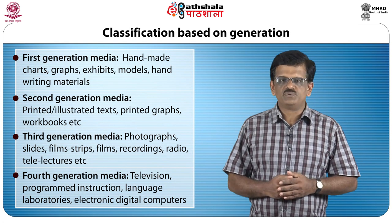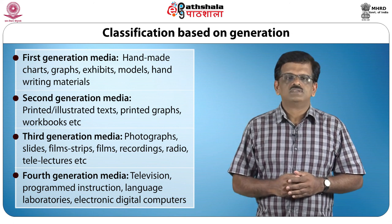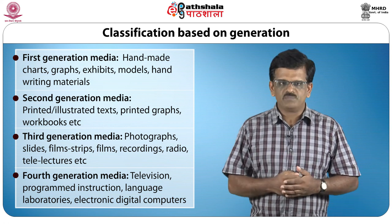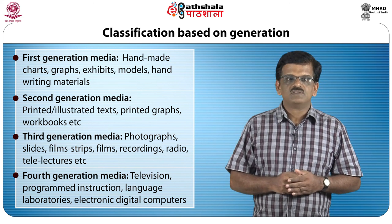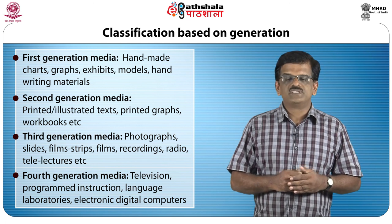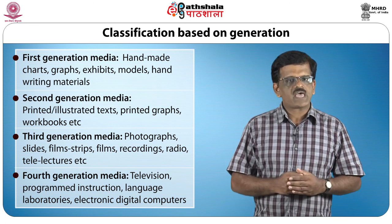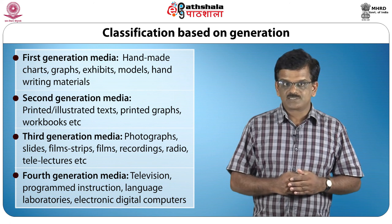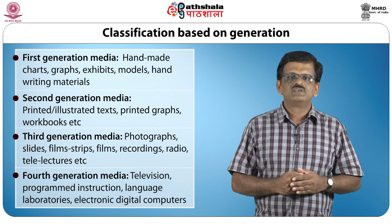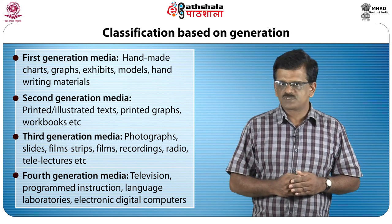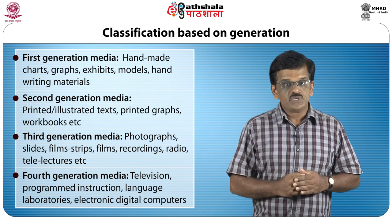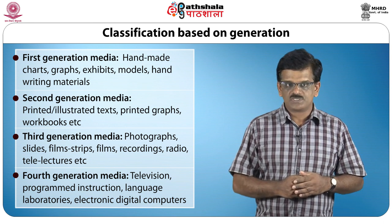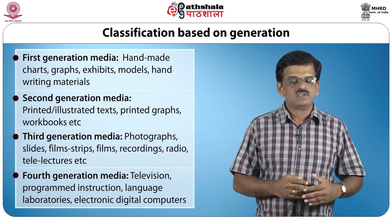The third way of classifying audio-visual aids is based on their generation. The UNESCO Bulletin on New Methods and Techniques in Education distinguishes four generations of educational media. The first generation includes handmade charts, graphs, exhibits, models and handwriting materials. The second generation includes printed and illustrated texts, printed graphs and workbooks. The third generation includes photographs, slides, film strips, films, recordings, video, radio and tele-lectures. The fourth generation includes television, programmed instruction, language laboratories, and electronic and digital computer-based multimedia.